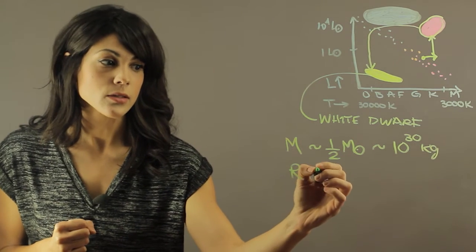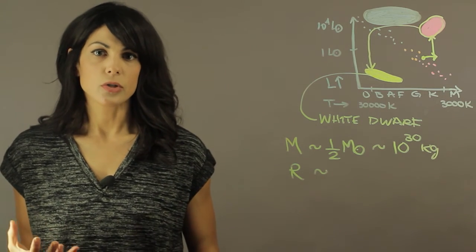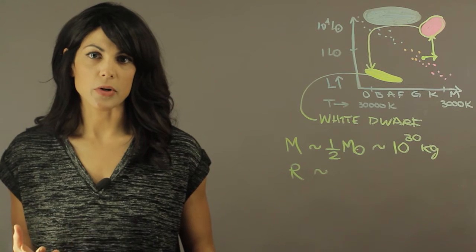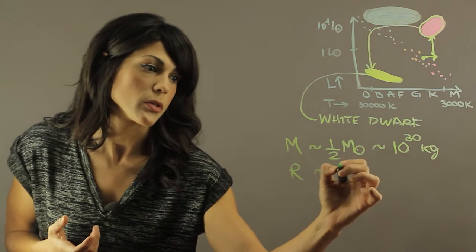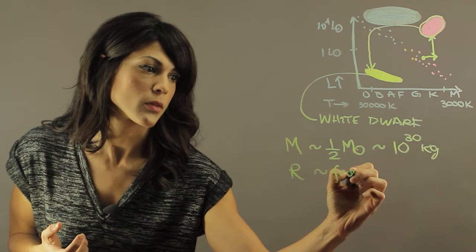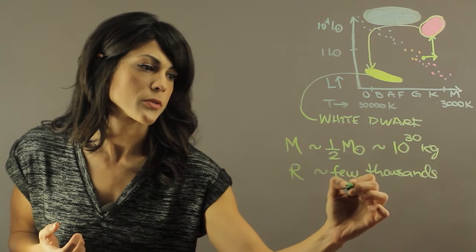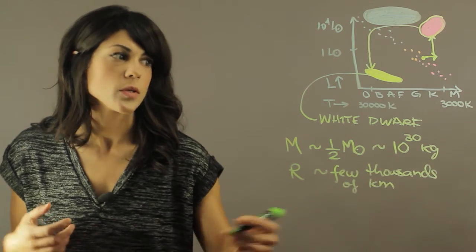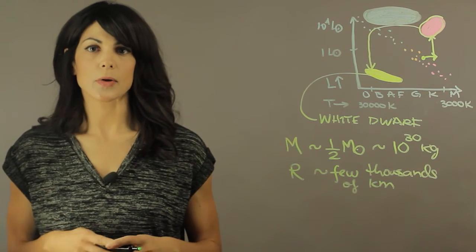The actual radius of a white dwarf is about the size of planet Earth. It's just a few thousand kilometers across in radius - about 6,000 kilometers. So that's about the size of a typical white dwarf.